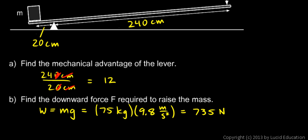That's the weight downward on the mass. That's how much force we would have to exert to lift the mass up if we were simply trying to lift it by hand without a lever.